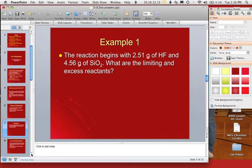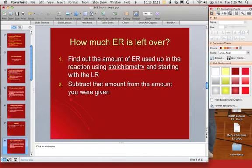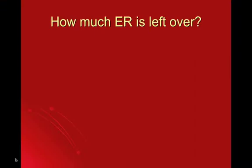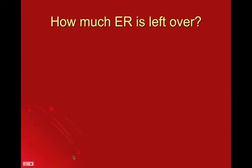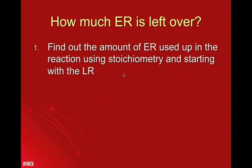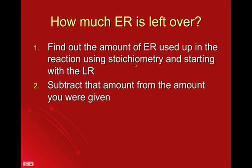Picking up right where we left off, what if the question asked, instead of just identifying which one's excess and which one's limiting, they wanted to know how much of the excess reactant is left over? To do that, super easy. Once you figure out what your limiting reactant is, then you need to find out how much of your excess reactant is going to be used up with it, and you do that using stoichiometry. And then once you have that, subtract the amount from the amount that you were given to begin with. Just like with the sandwiches, we do the exact same thing here.